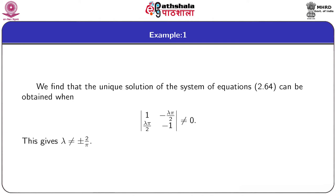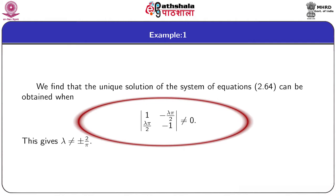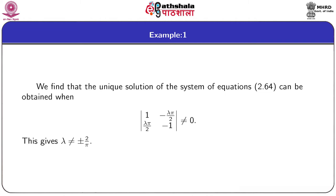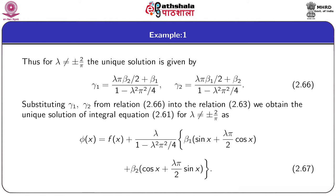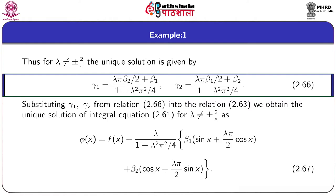We find the unique solution of equation 2.64 if the determinant of the coefficient matrix is not equal to 0. This gives λ not equal to ±2/π. For λ not equal to ±2/π, we can get the unique solution of the system of linear equations, and these are given by γ1 and γ2 in equation 2.66.